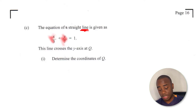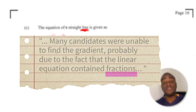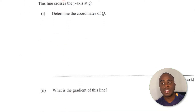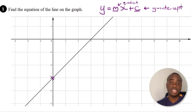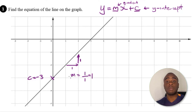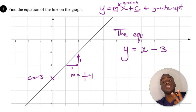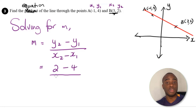As a matter of fact, the examiner's report said that many candidates were unable to find the gradient, probably due to the fact that the linear equation contained fractions. So we have to make sure that we're able to find the gradient in a lot of different ways — from the general equation, from an equation not in general form, from a diagram, from a point and a line, or even from two points.